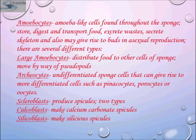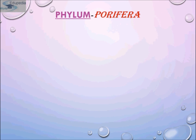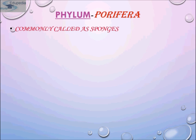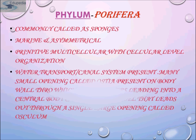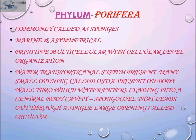Members of Phylum Porifera are commonly known as sponges. They are generally marine, mostly asymmetrical, and also found in freshwater. These are primitive multicellular animals with cellular level organization. Sponges have a water transport or canal system: water enters through minute pores called ostia in the body wall, flows into the central cavity called the spongocoel, and exits through the osculum.